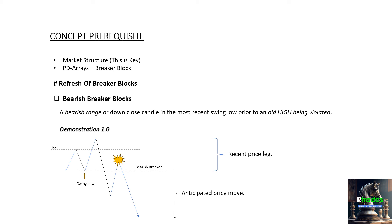We have two breaker blocks: a bearish breaker block and a bullish breaker block. A bearish breaker block is a bearish range, or down-close candle, in the most recent swing low prior to an old high being violated.